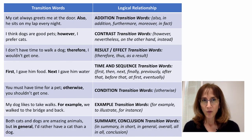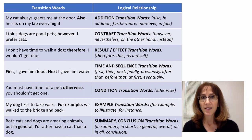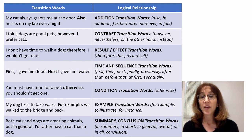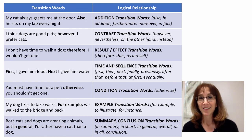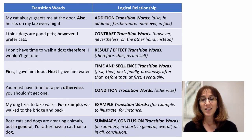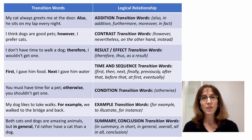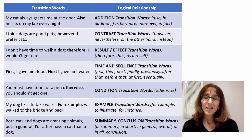An important point about transition words is that they express meaning, so you'll always want to choose them wisely. To show addition, use words like 'also' or 'furthermore.' For contrast, use 'however' or 'on the other hand.' For result and effect, use 'therefore' or 'thus.' For time and sequence, use 'first,' 'second,' 'third,' or 'then.' For condition, use 'otherwise.' For examples, use 'for example' or 'for instance.' To summarize or conclude, use 'in summary,' 'in short,' or 'overall.' These are different meanings transition words carry, and you basically just have to memorize them.